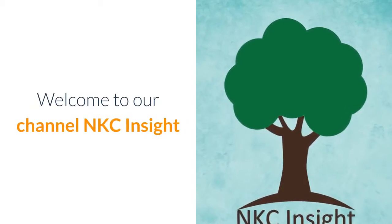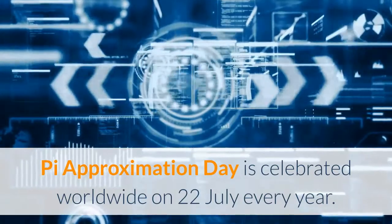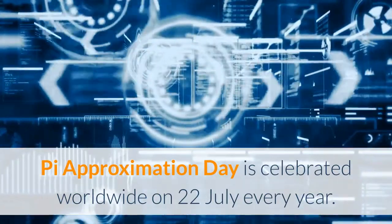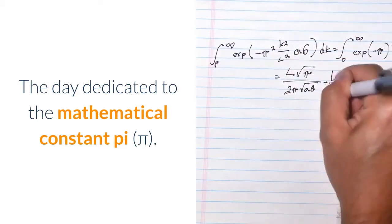Welcome to our channel NKC Insight. Pi Approximation Day is celebrated worldwide on the 22nd of July every year. The day is dedicated to the mathematical constant Pi.